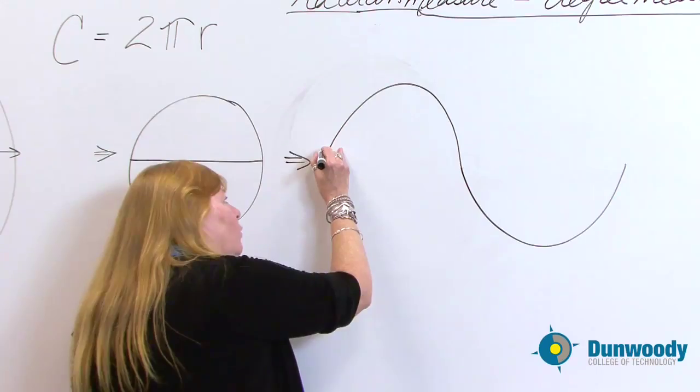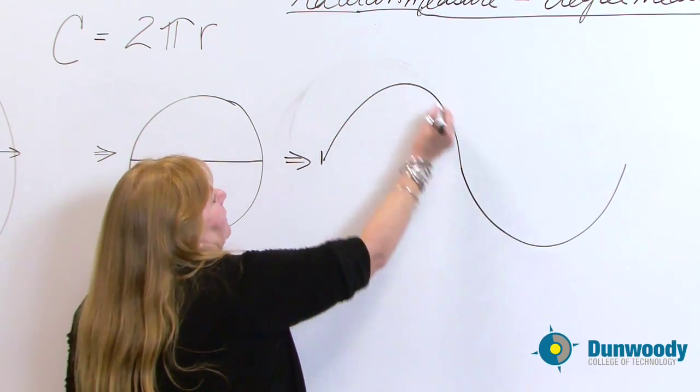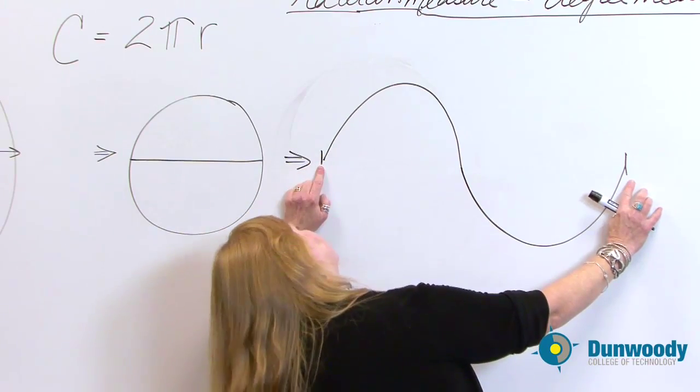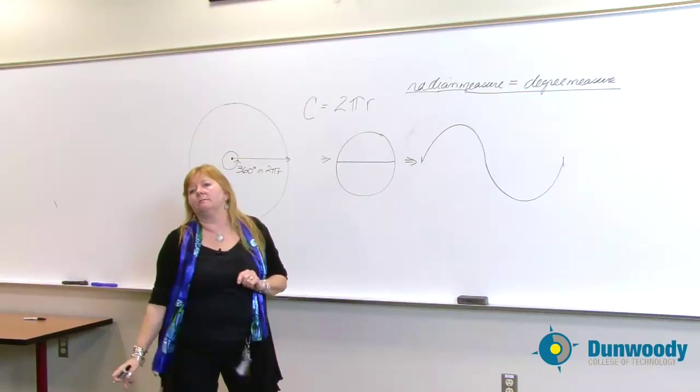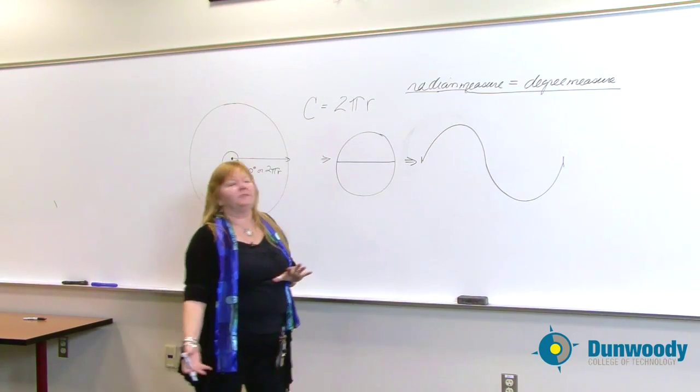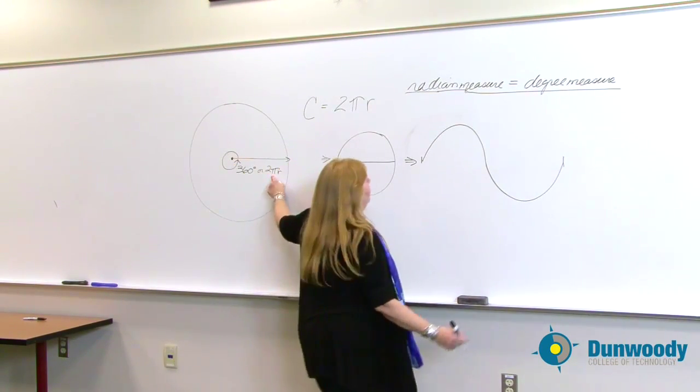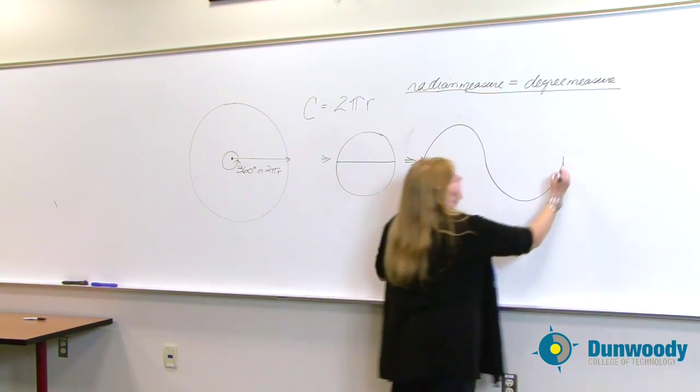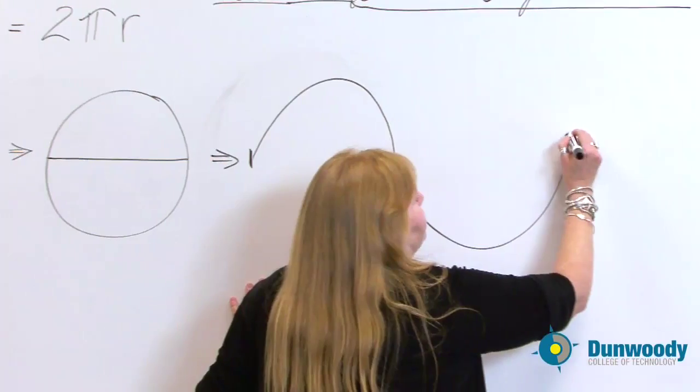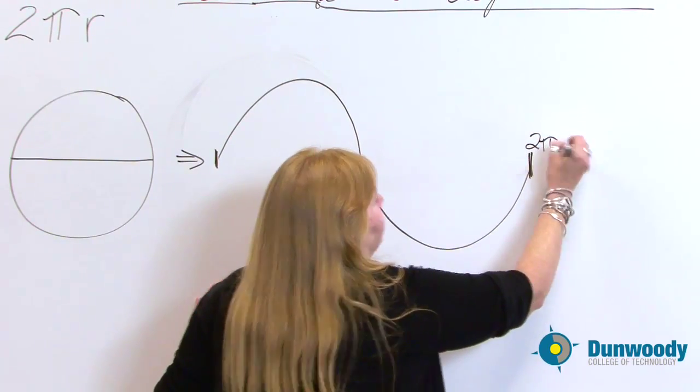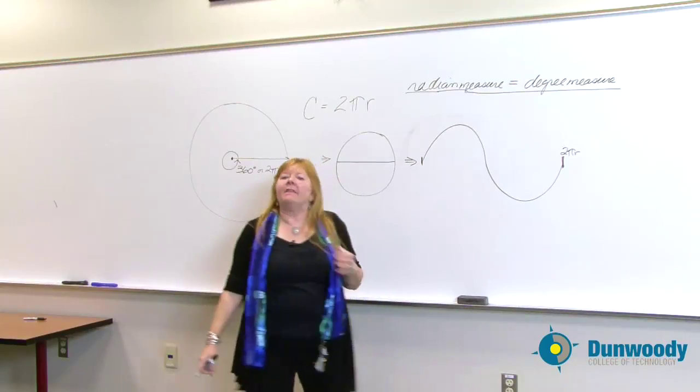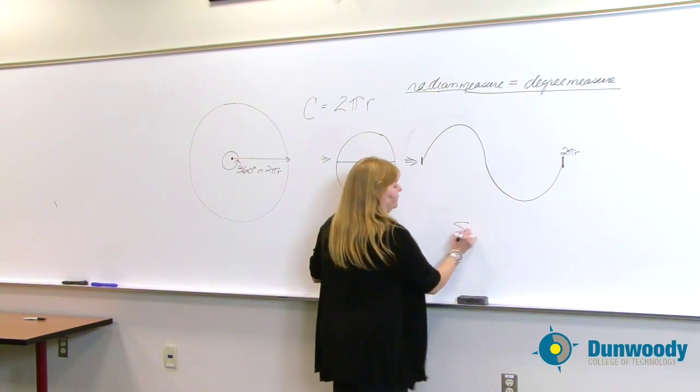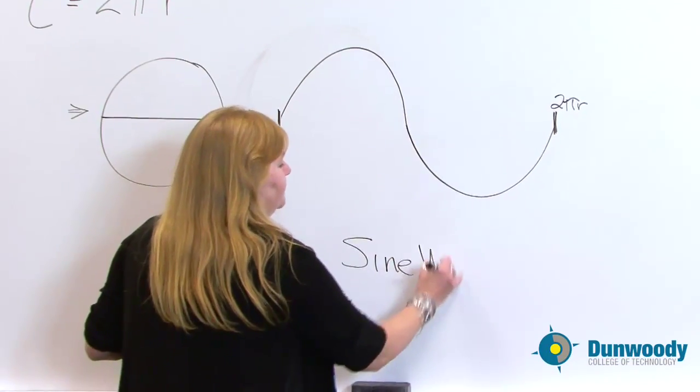But let's talk about measuring it. This measurement, walking from here to here, is exactly the same length as something called circumference. It's the same length. And what's circumference? 2πr. So the length of this from here to here is 2πr in length. It's just circumference. And that's called radian measure of a sine wave. Welcome to what a sine wave looks like.